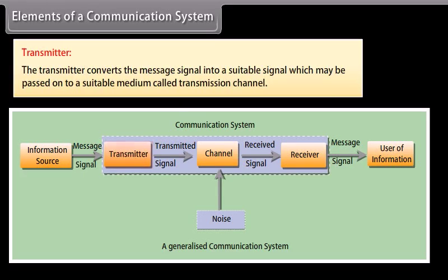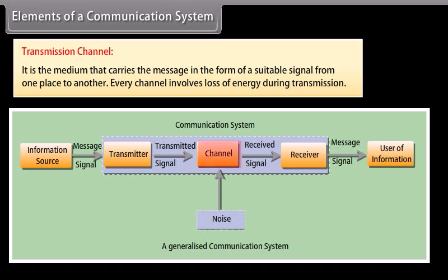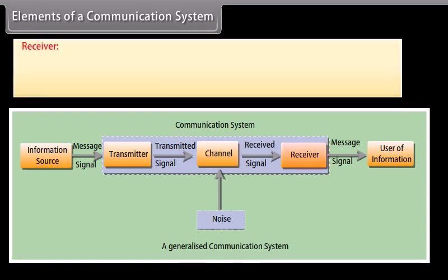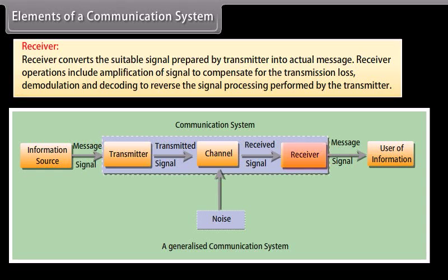The transmitter converts the message signal into a suitable signal which may be passed on to a suitable medium called the transmission channel. The transmission channel is the medium that carries the message in the form of a suitable signal from one place to another. Every channel involves loss of energy during transmission. The receiver converts the suitable signal prepared by the transmitter into the actual message.